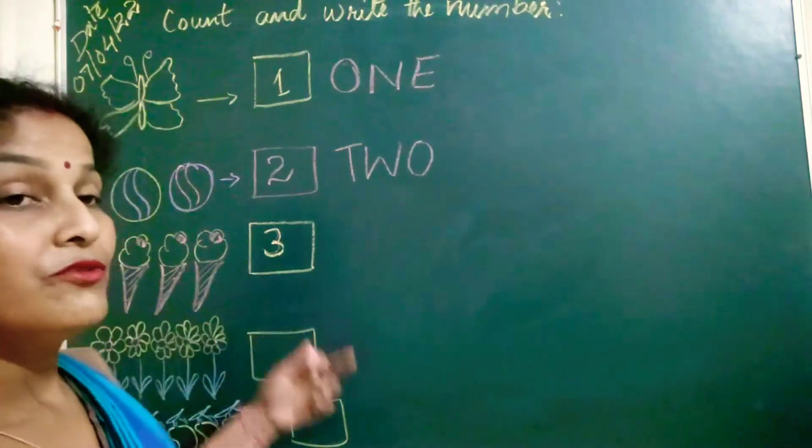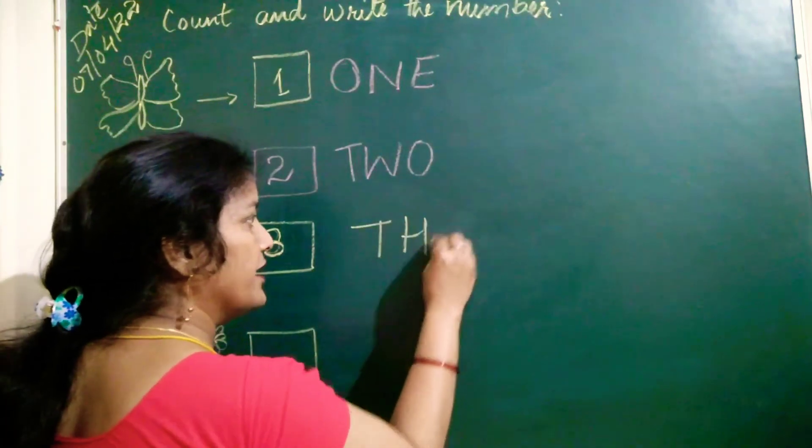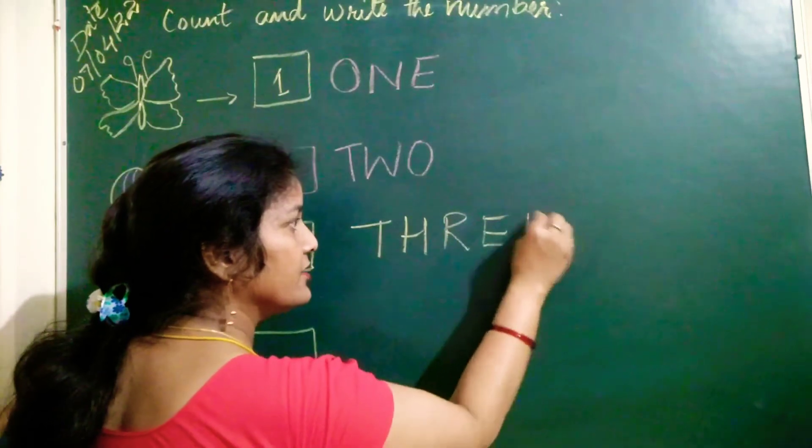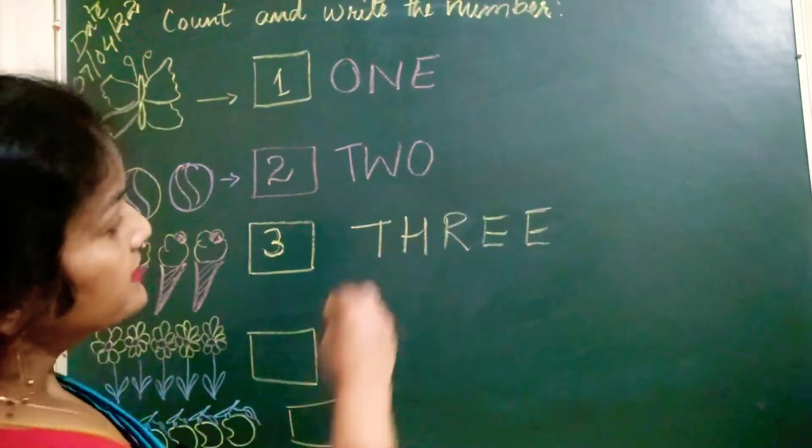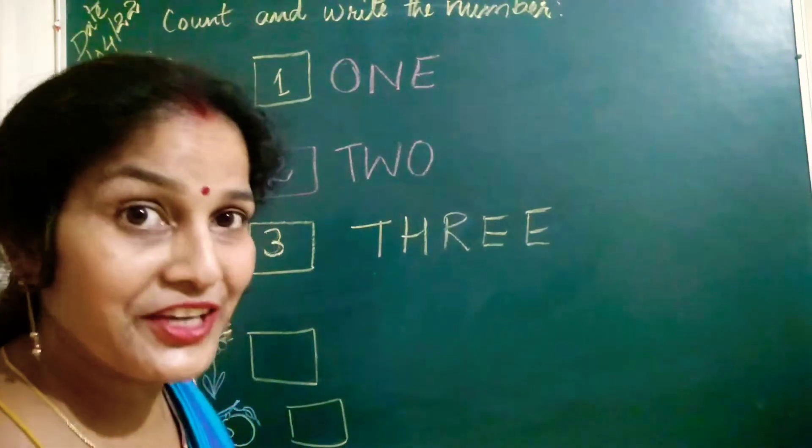So what will be the spelling of three? T. H. R. Double E. T. H. R. Double E. Three. Okay.